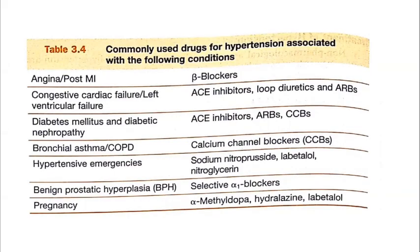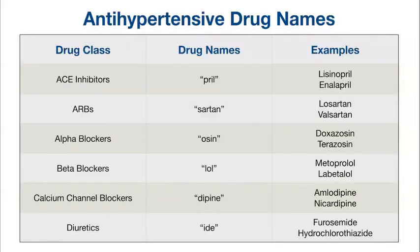There is a table showing conditions and the drugs used for them — if you want to screenshot this, it is very helpful during exams. And lastly, anti-hypertensive drug names: if we remember the suffixes, it's easy. ACE inhibitors end in -PRIL (e.g., enalapril), ARBs end in -SARTAN (e.g., losartan, valsartan), alpha blockers end in -OSIN (e.g., terazosin), beta blockers end in -LOL (e.g., metoprolol, labetalol), calcium channel blockers end in -DIPINE (e.g., nicardipine), and diuretics include furosemide, etc.